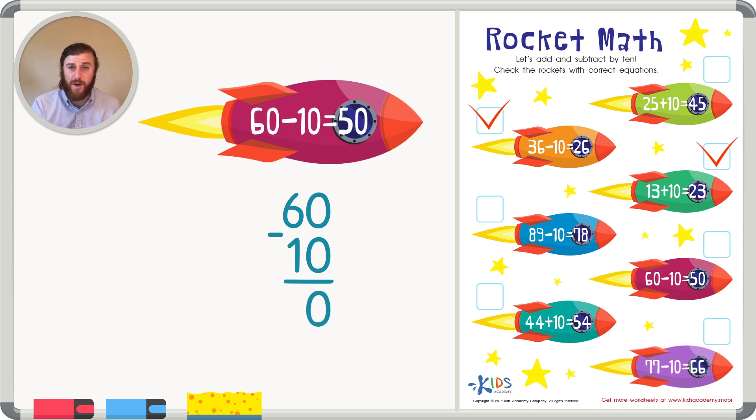And 6 minus 1, we're taking away 1 from 6. So 1 less than 6 is 5. 60 minus 10 is 50. So this rocket shows a correct number sentence.